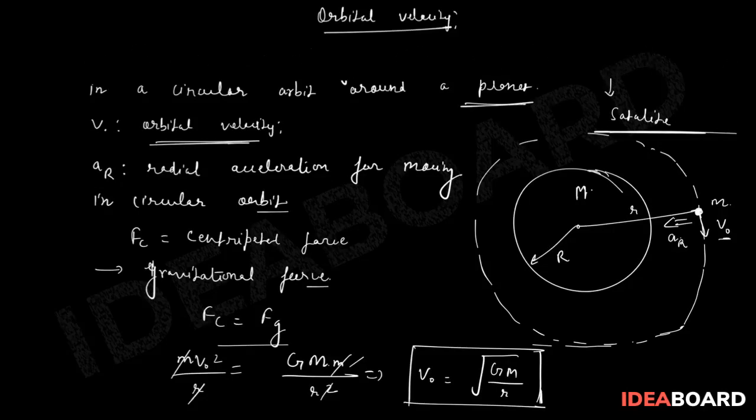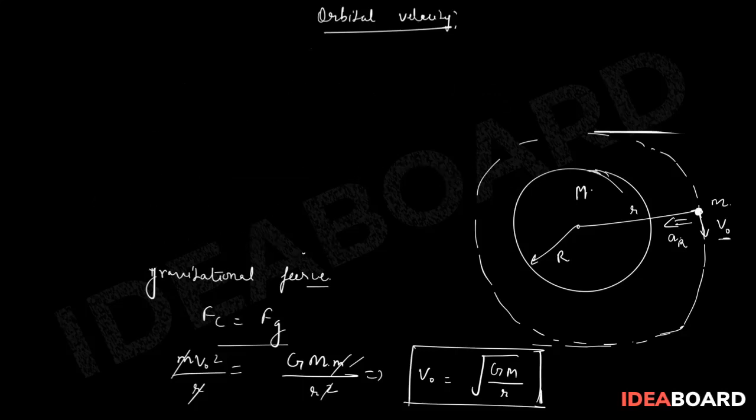So this is GM upon r under root. This is going to be the orbital velocity expression. Now we can also modify this expression if we wanted to calculate in terms of acceleration due to gravity on the surface of the Earth.